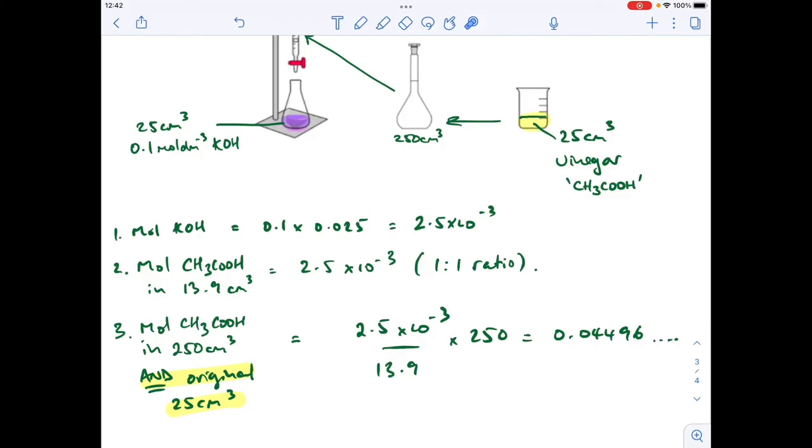To turn that into a concentration in moles per decimeter cubed, we just divide the moles by the volume. Remember there's 25 cm cubed of that, so we're going to divide this by the 25, but it's got to be in dm cubed, and that will give us the moles per decimeter cubed concentration.